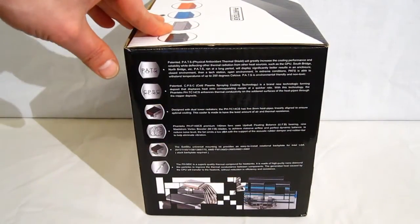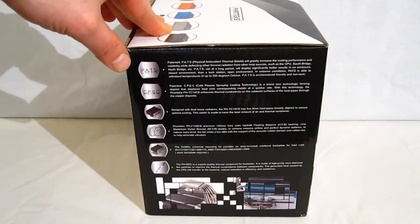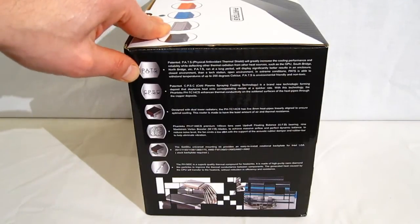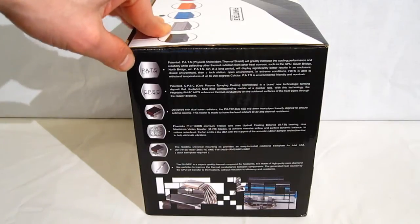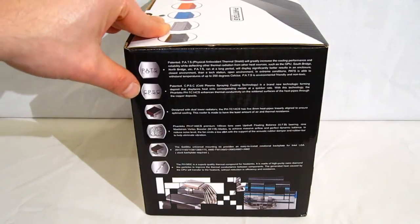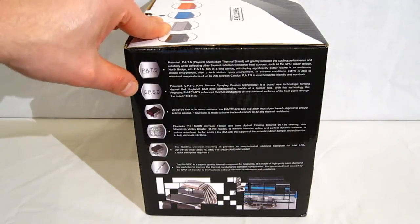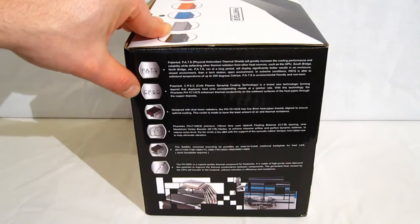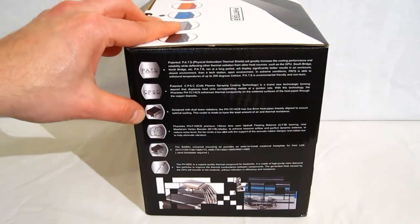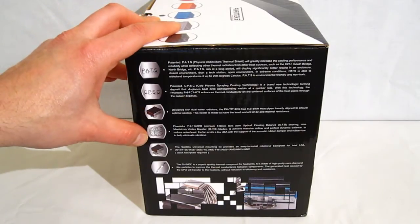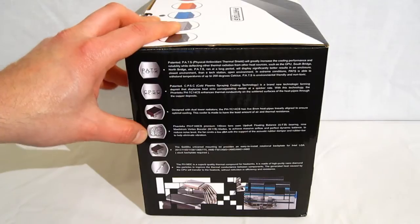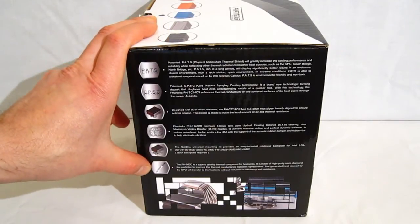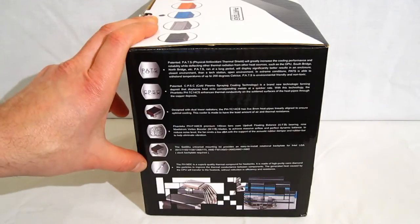Going around the side of the box we get some actual meat as to the features of the PHTC-14CS. First we have PATS which is a physical antioxidant thermal shield. It is an actual spray coating which is a thermal shield for the aluminum fins. It's going to prevent them from picking up any heat from outside heat sources. CPSC, cold plasma spraying technology, which actually helps the unit get the heat from the CPU out through the fins. It makes for better dissipation throughout all the surfaces. Dual tower radiators with five 8mm heat pipes. Dual 140mm fans with a UFB bearing, selectable PWM or not. Socket mounting kit and PHNDC thermal interface material which is one of the best thermal interface materials available on the market.